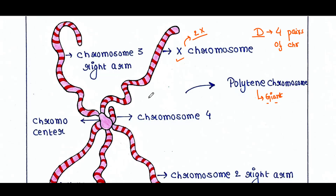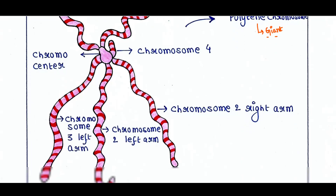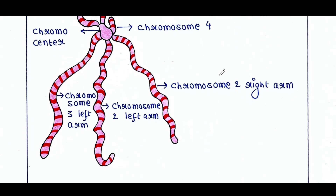Next is chromosome number 2. You can see chromosome number 2 right arm and chromosome number 2 left arm. This is a single chromosome — number 2. The centromere is found in the middle position of the chromosome, so it has two arms like that. Here also, two homologous chromosomes are found together.